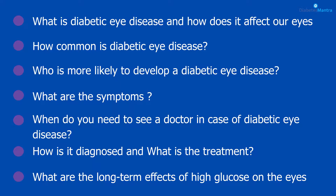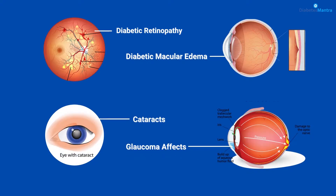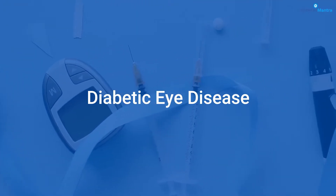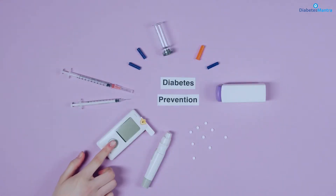First of all, let us see what is diabetic eye disease. When a group of eye problems like diabetic retinopathy, diabetic macular edema, cataracts and glaucoma affect people with diabetes, we term it as diabetic eye disease. Over time, diabetes can cause harm to your eyes that can lead to inadequate vision or even blindness, but you can take steps to prevent diabetic eye disease or keep it from getting worse by taking care of your diabetes.